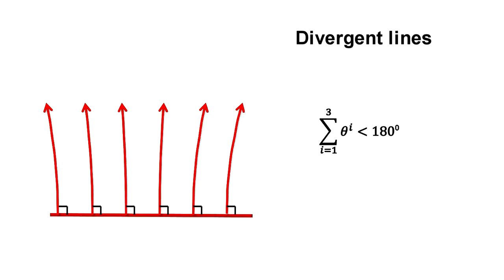Here, the sum of the angles of a triangle is less than 180 degrees, and the circumference of a circle is more than 2 pi times its radius. This is hyperbolic geometry. It represents space with a negative curvature.